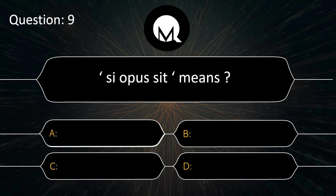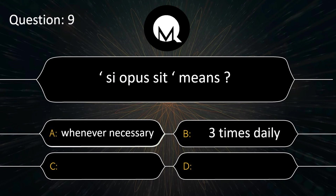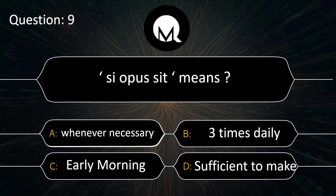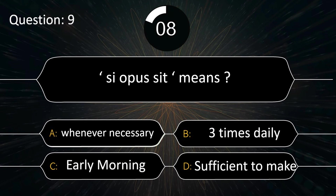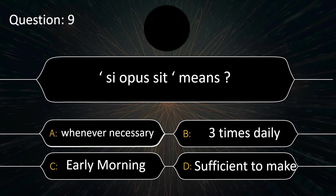Si opus sit means: whenever necessary, three times daily, early morning, or sufficient to make? Answer is whenever necessary.